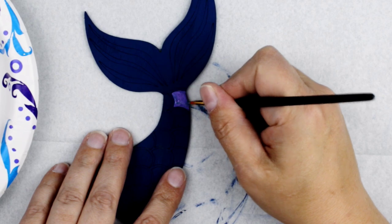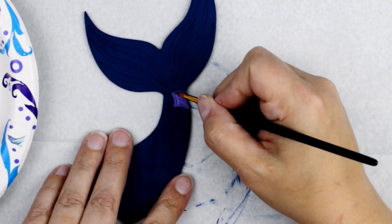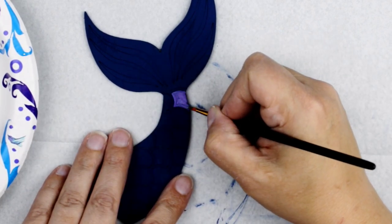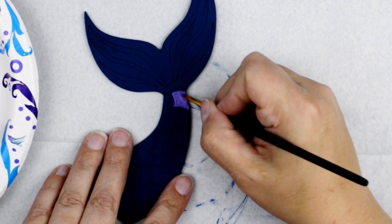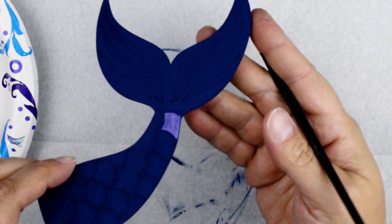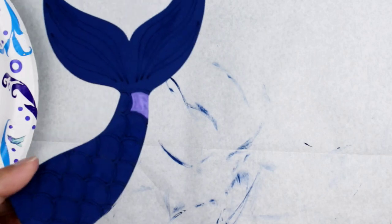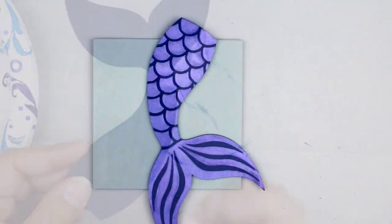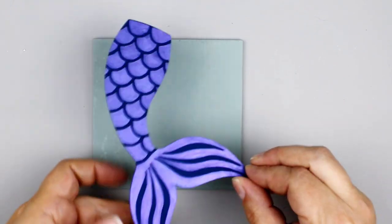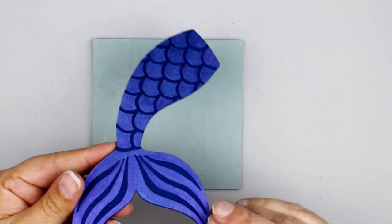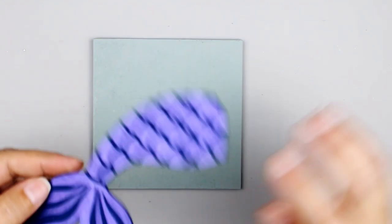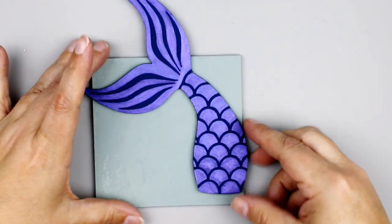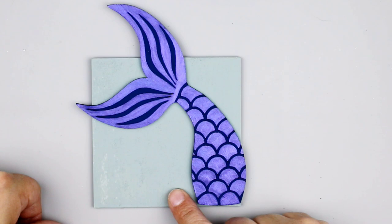Now, this color shift changes color depending on whatever you use underneath. So definitely check out a few different colors to see what combination you like. But this color shift paint is just so fun. And I love how once it's finished, those scales just really pop on that dark blue. It's such a fun paint. So definitely check that paint out. If you haven't yet, it's really fun.